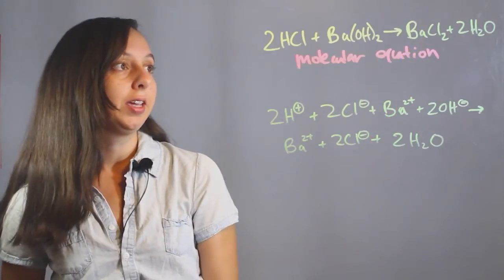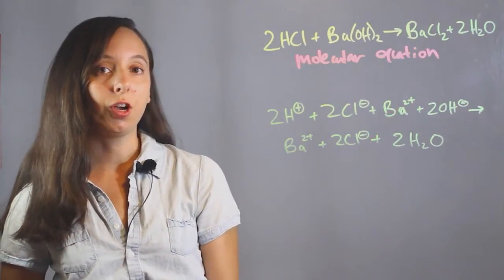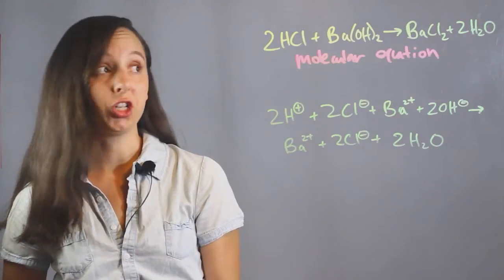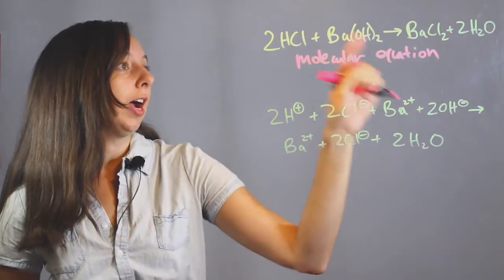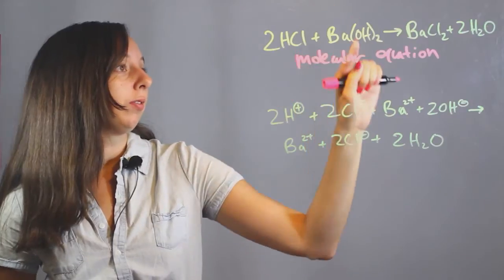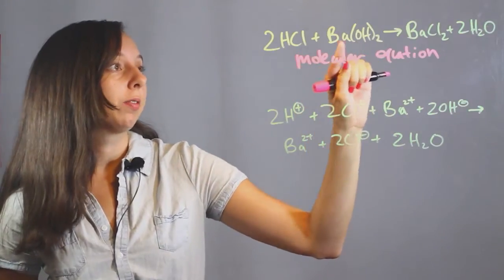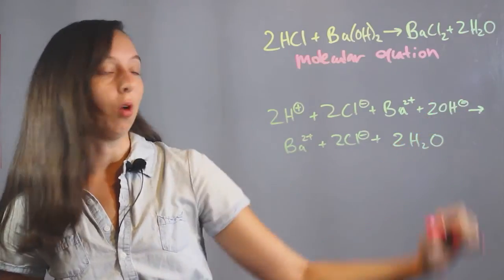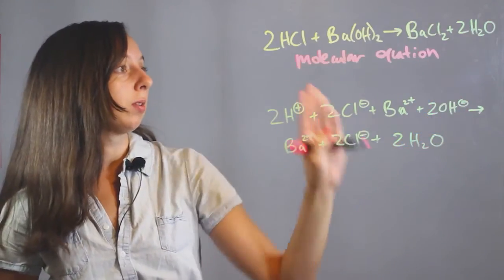And what that means is that we basically just show what's happening, no charges, just how things are switching. And so you can see we've got hydrochloric acid, we've got some hydroxides reacting with barium, and then we create barium chloride and water. So, this is our molecular equation.